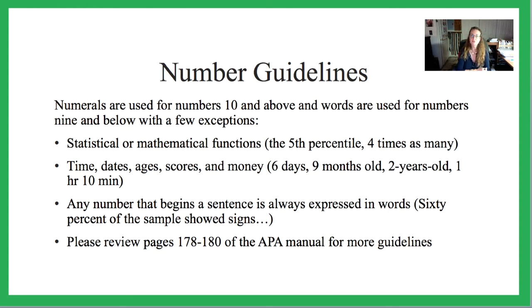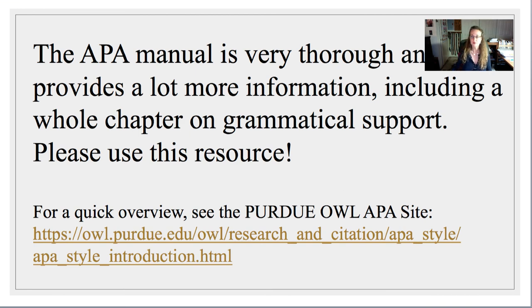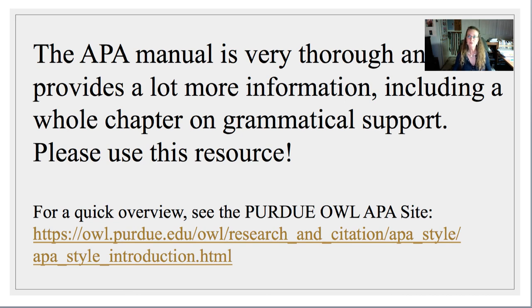Here are some other tips about writing numbers: numbers from 10 and up use numerals; numbers below 10 are spelled out, unless it involves statistics or mathematical functions, times, dates, years, or money. Any number that begins a sentence is always spelled out. You can review pages 178 to 180. There's also guidance on including tables in your document. Finally, the Purdue OWL — the University of Purdue's Online Writing Lab — has excellent resources and a nice infographic with really good information. If you don't have the APA book, this is a good place to go. That's just a quick overview, and I hope it's helpful.